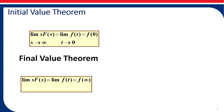The final value of f(t), which is f(∞), is given by the limit of s·F(s) as s tends to 0. So we multiply F(s) by s and letting s tend to 0 gives you the final value of f(t).